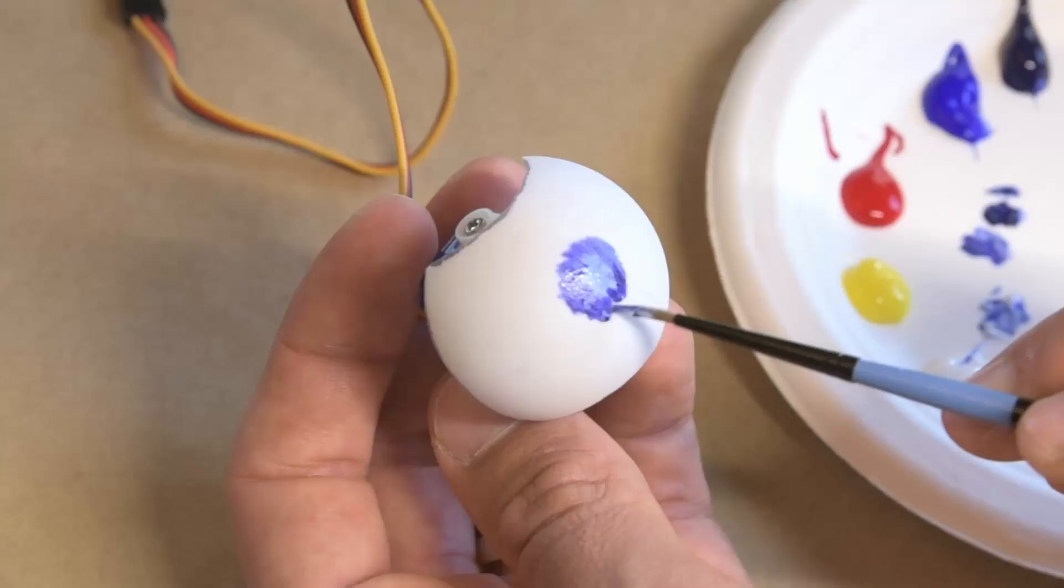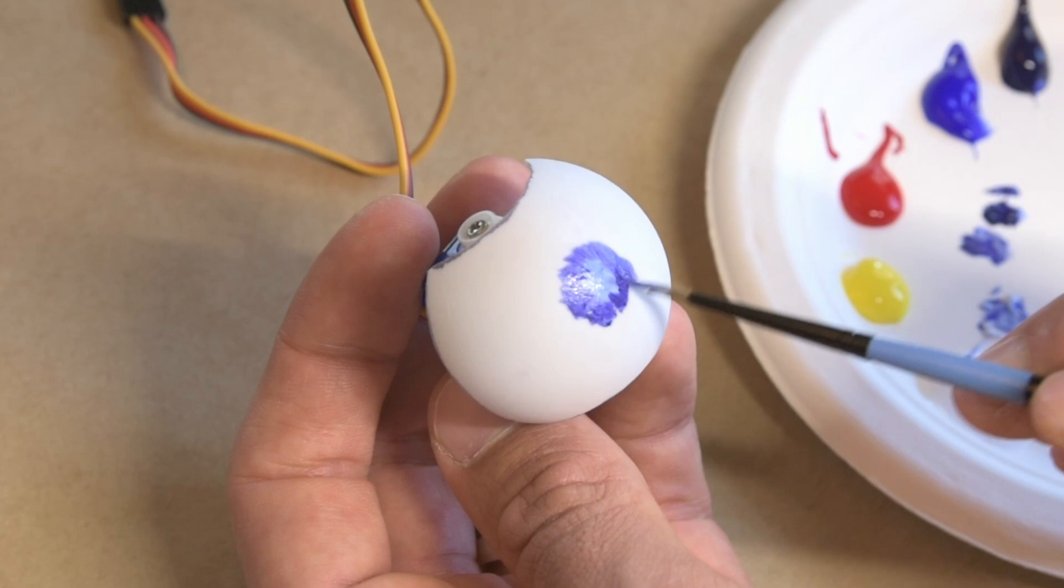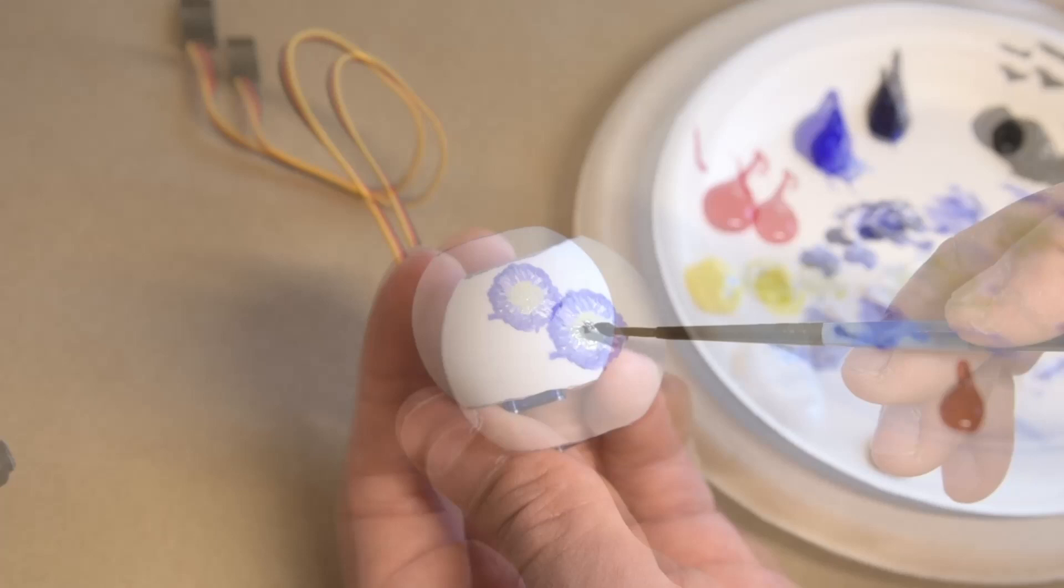I painted the eye starting with light blue for the iris and added some darker blue around the outside for contrast. I followed this up with some white and yellow in the center before adding the black pupil.